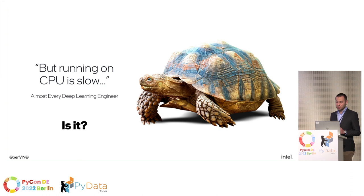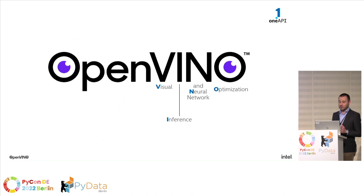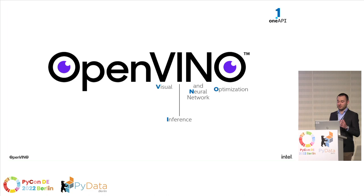If you'd like to deploy your network on the edge — on your computer or laptop — without buying an additional GPU card or building an API, I have the solution for you: OpenVINO. OpenVINO is an open source toolkit for optimizing and deploying AI inference. It stands for Open Visual Inference and Neural Network Optimization. And it's not only for computer vision — it also supports NLP, audio processing, time forecasting, and more.